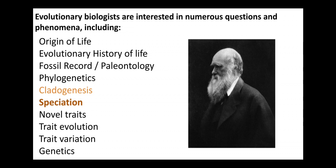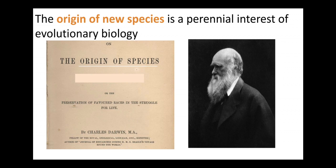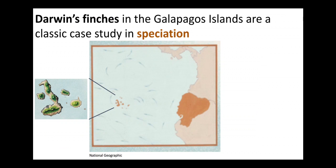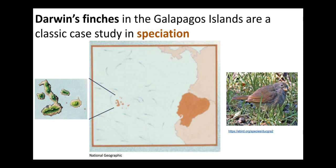Within the process of cladogenesis, we often consider the particular process of speciation, which is how ancestral species over time split or transition into different kinds of species. This is the process that gave rise to the name of Darwin's book, The Origin of Species. Darwin's finches are a classic case study in the process of speciation. It's been determined that all of Darwin's finches evolved from a single finch species from mainland South America, which is the ancestral species to all of the finches that occur on the Galapagos Islands.